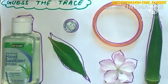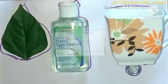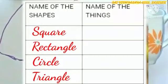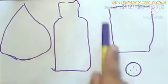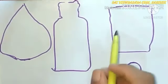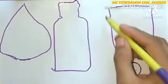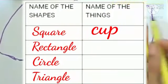Next, guess the shape which I have traced with these objects and fill in the table. These are 2D shapes. So, you have to guess 2D shapes. First, almost similar to square shape. So, write cup in the square column.